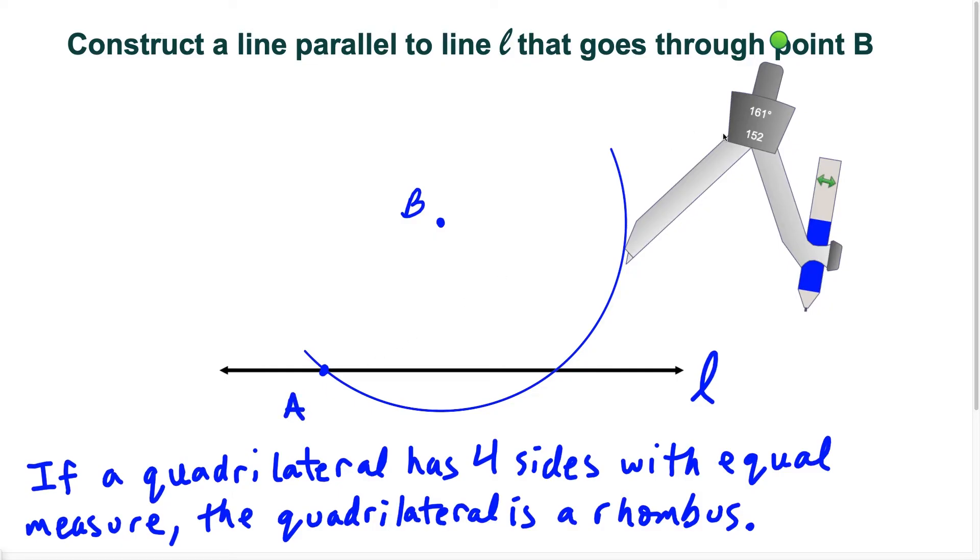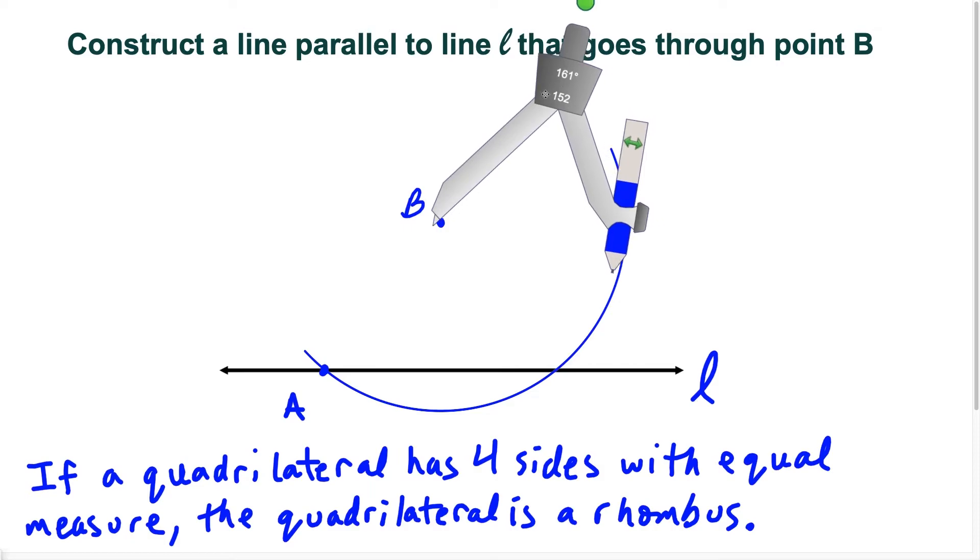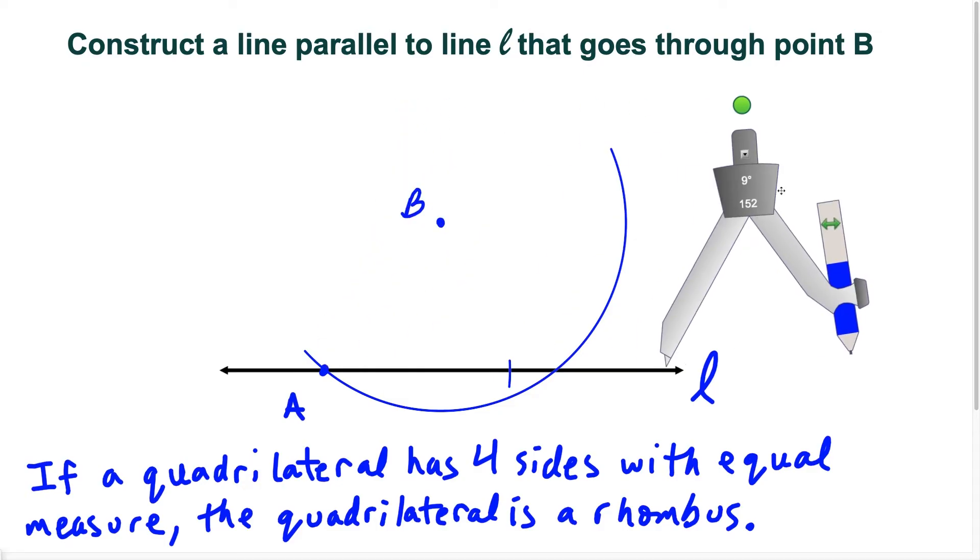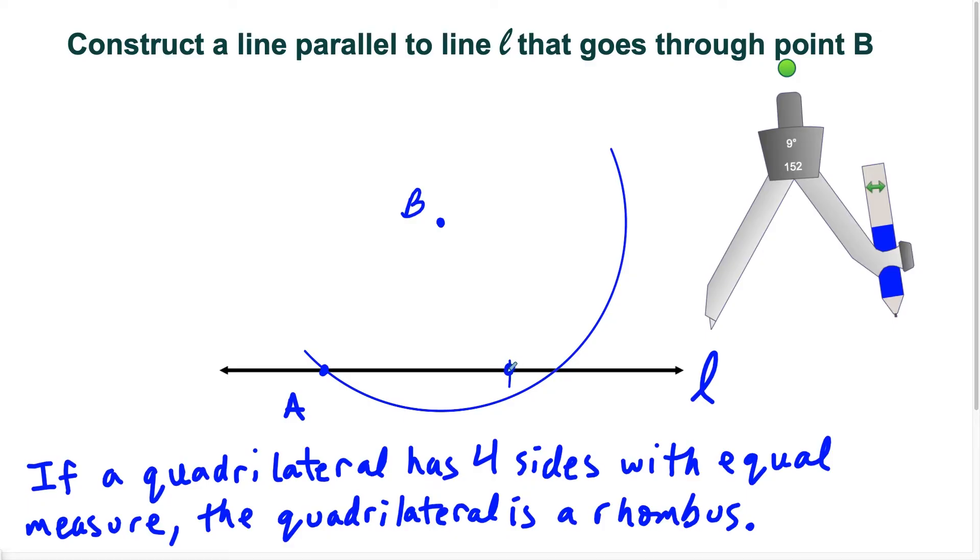So I started this construction by placing the compass on point B, but now I'm going to move it from B over to point A, and I'm going to swing another arc. Remember, I'm not changing the length of the compass at all, but I swing the arc and it hits this line L at another location, which I'm going to call point C.